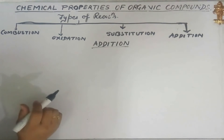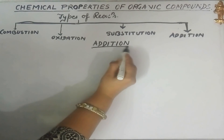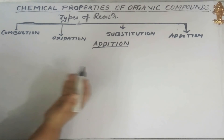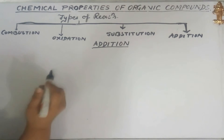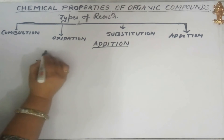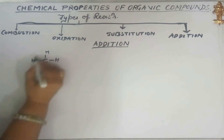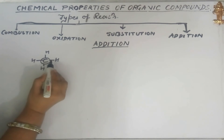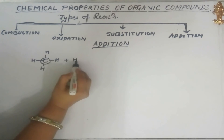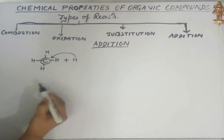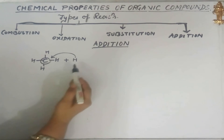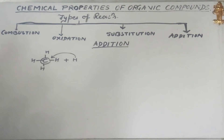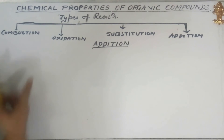Now let us start with the addition reaction. As the name suggests, in this kind of reaction we add some atoms or molecules to the molecule. However, for addition to be possible, there must be scope for it. As discussed with substitution — in methane, the valence of carbon is four and all valences are satisfied by hydrogen, so nothing can be added. Saturated hydrocarbons therefore do not undergo addition reaction; they undergo substitution reaction instead.